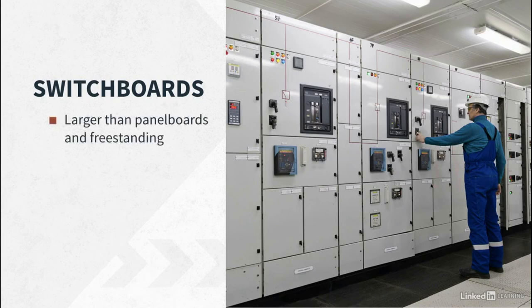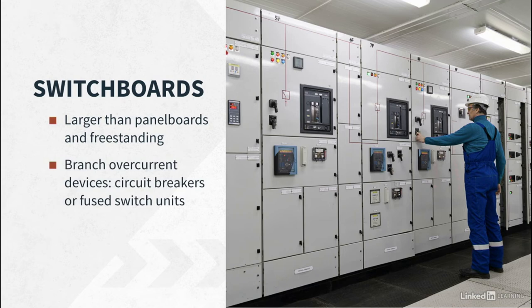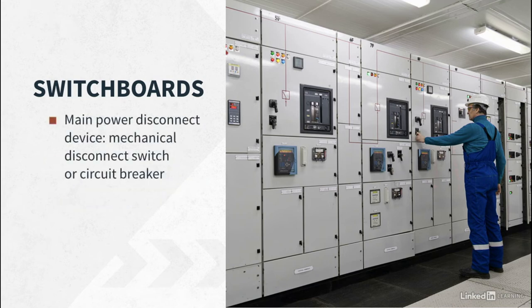Switchboards are larger than panelboards and sometimes freestanding. The branch overcurrent devices are either circuit breakers or switch units that have fuses inside of them. Switchboards may have a main device to disconnect the power, either a mechanical disconnect style switch or a main circuit breaker.